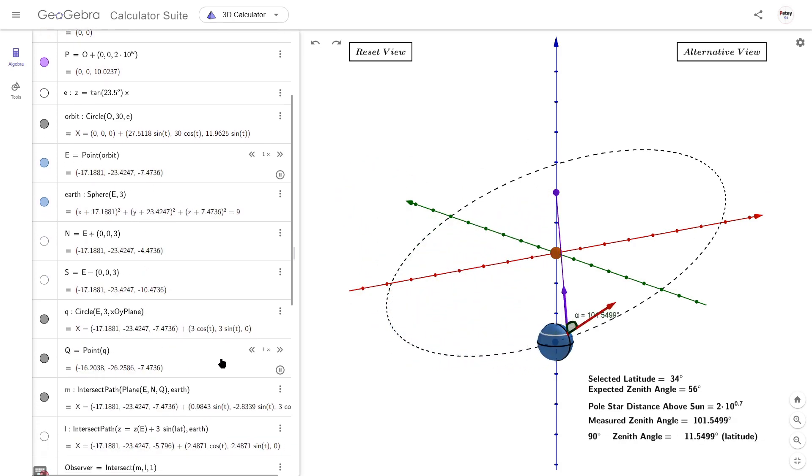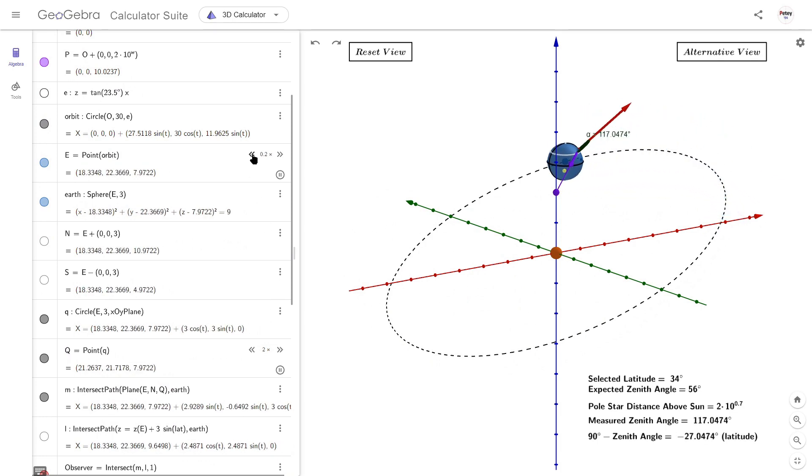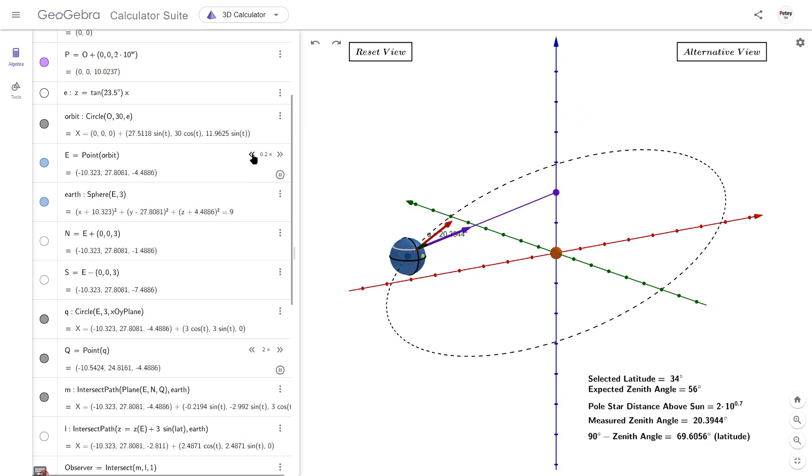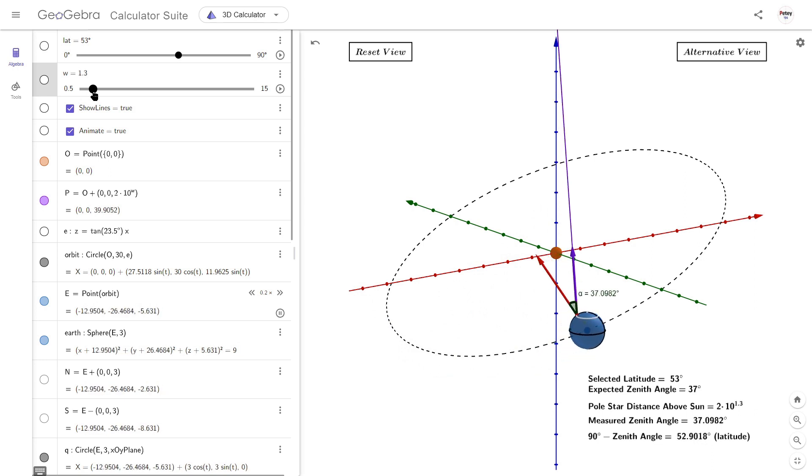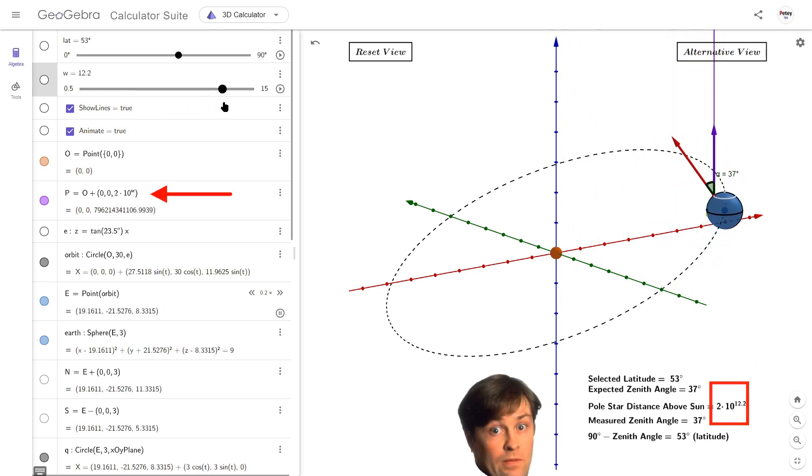Let me just alter these speeds. It's a bit better. So let's start to move Polaris away. It looks like it's stabilized.